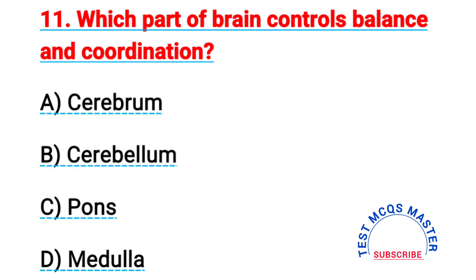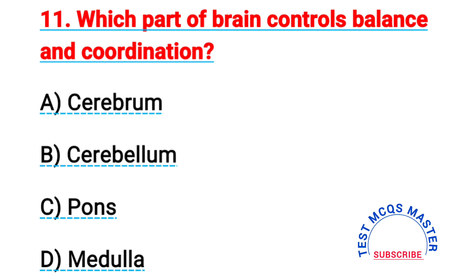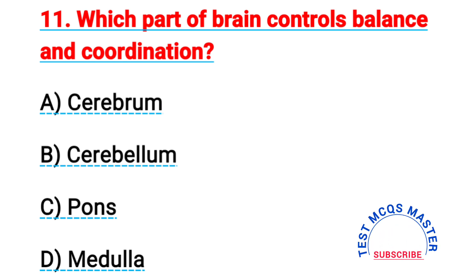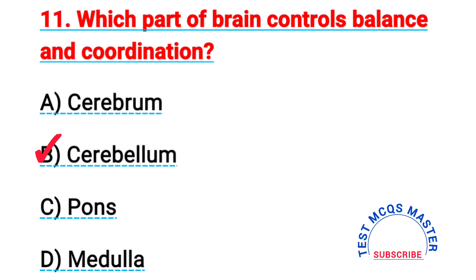Question number eleven: which part of the brain controls balance and coordination? The right answer is B, cerebellum.